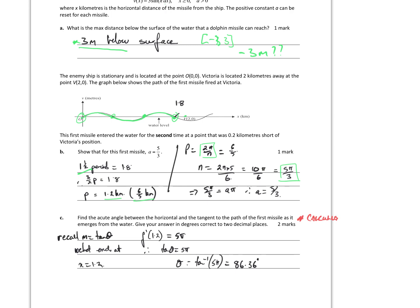Show that the first parameter α is equal to 5/3. At that point we have one period to there, then another half period to 1.8. So one and a half periods equals 1.8, meaning (3/2) × period equals 1.8, so the period equals 1.2 kilometres, which is 6/5. Now I know 2π/n equals 6/5.